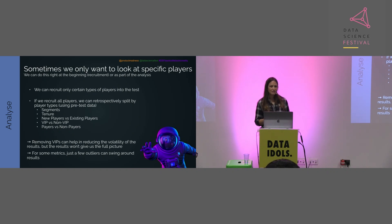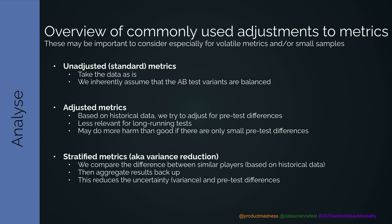We can also adjust the metrics, which is important for volatile metrics or small sample sizes. Up until now I've been talking about standard metrics where we take the data as is and assume A/B testing variants are balanced. But sometimes we still see pretest biases, in which case we can use an adjusted metric — based on historic data, we adjust for these pretest differences. It's less relevant for long-running tests and we can only do this for existing players, and it might do more harm than good for small pretest differences.